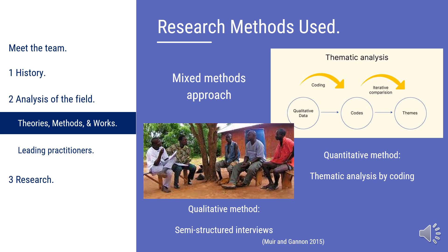The main research methods used in embodiment research is a mixed methods approach, meaning researchers use both qualitative and quantitative research techniques. An example of qualitative research is semi-structured interviews where the researcher gains in-depth knowledge on the topic. Quantitative research methods seek statistical significance and use thematic analysis, which starts with a data set and codes the information to identify themes.